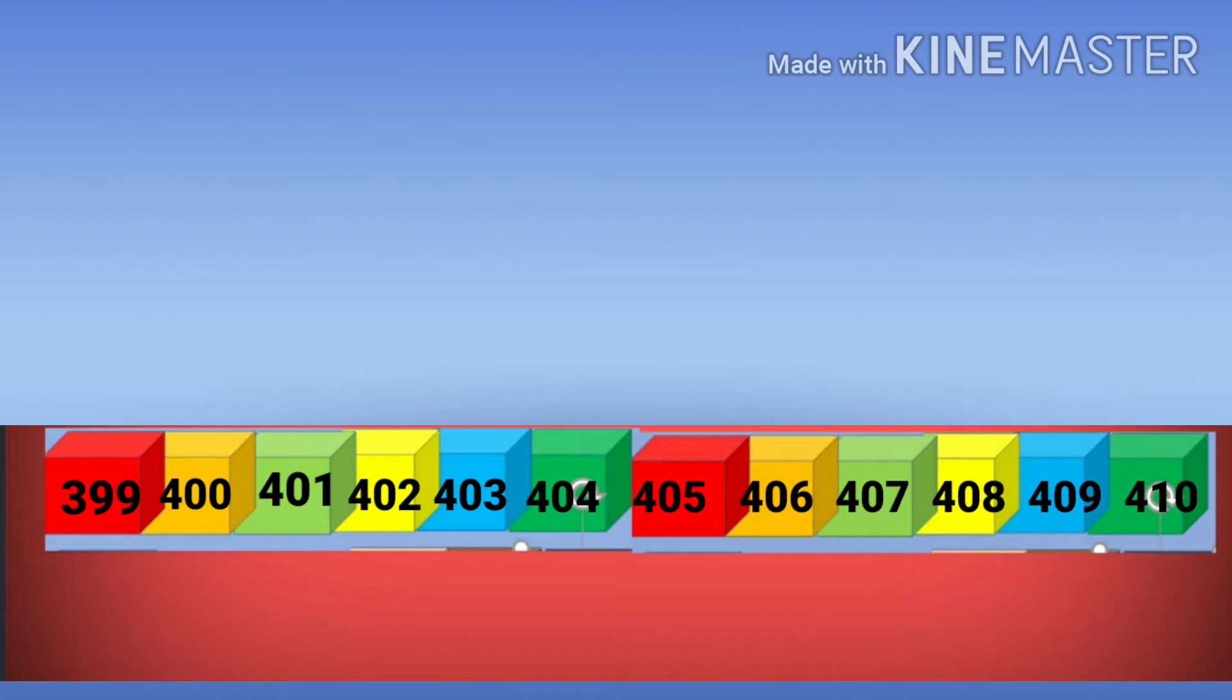The next example, see here, you see the number strips. The numbers from 399 to 410 are shown on that number strips. Now, find the number before.